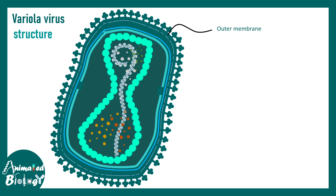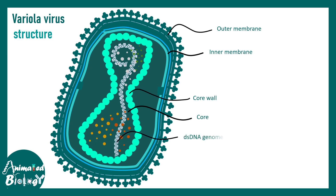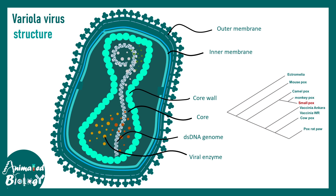Here we talk about the structure of the virus in a bit more detail. Here is the outer membrane, here is the inner membrane — it actually has two membranes. It has a core wall, and the core inside contains the double-stranded DNA genome along with many proteins essential for replication and transcription of the genome immediately after entering a host cell.